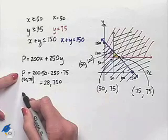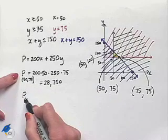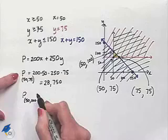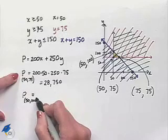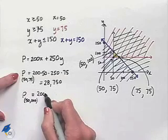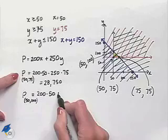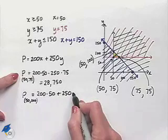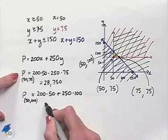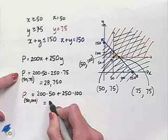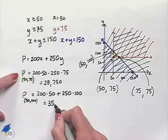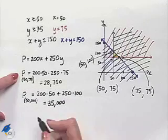Next, let's substitute the point 50 comma 100 into the objective function. We're going to have 200 multiplied times 50 plus 250 multiplied times 100. And again, I've previously figured this out to be 35,000. And finally,